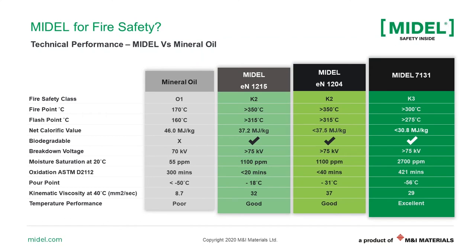Thank you, Steve. Welcome everybody. I'd just like to give you some brief summarising on the fire safety of ester liquids. On this summarising table, you can see many parameters about ester liquids compared to mineral oil. In this webinar, I'd just like to highlight the first four rows from a fire safety point of view. If we see the fire point on the second row, Midel ester liquids have a fire point greater than 300 degrees C, or more than 250 degrees C in the case of natural esters, whereas mineral oil has around 170 degrees C. This is important to classify these liquids as O-class or K-class. The threshold is the fire point: if greater than 300 degrees C, that is K-class; if below, that is O-class.